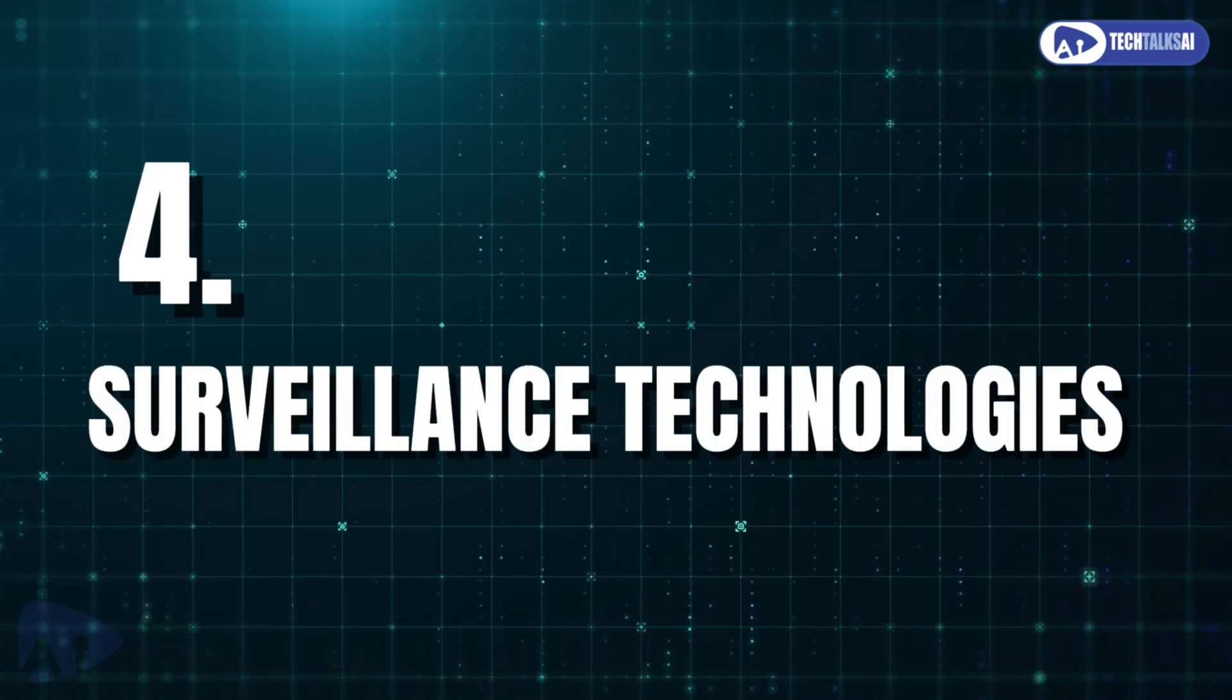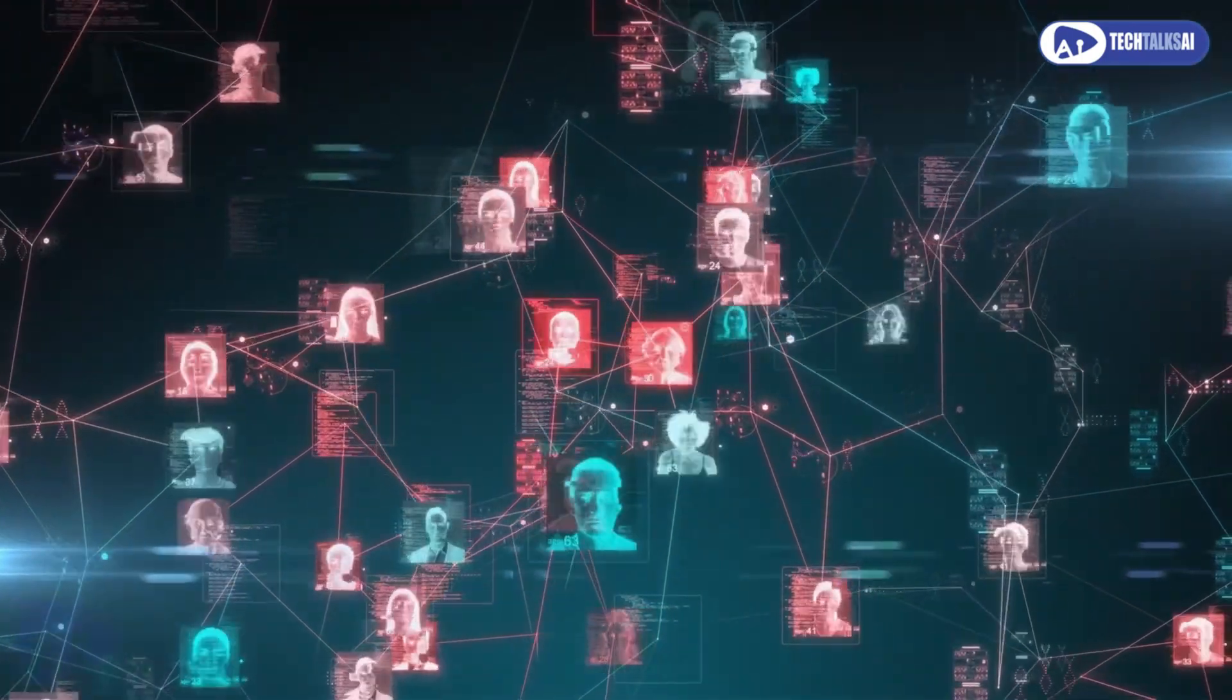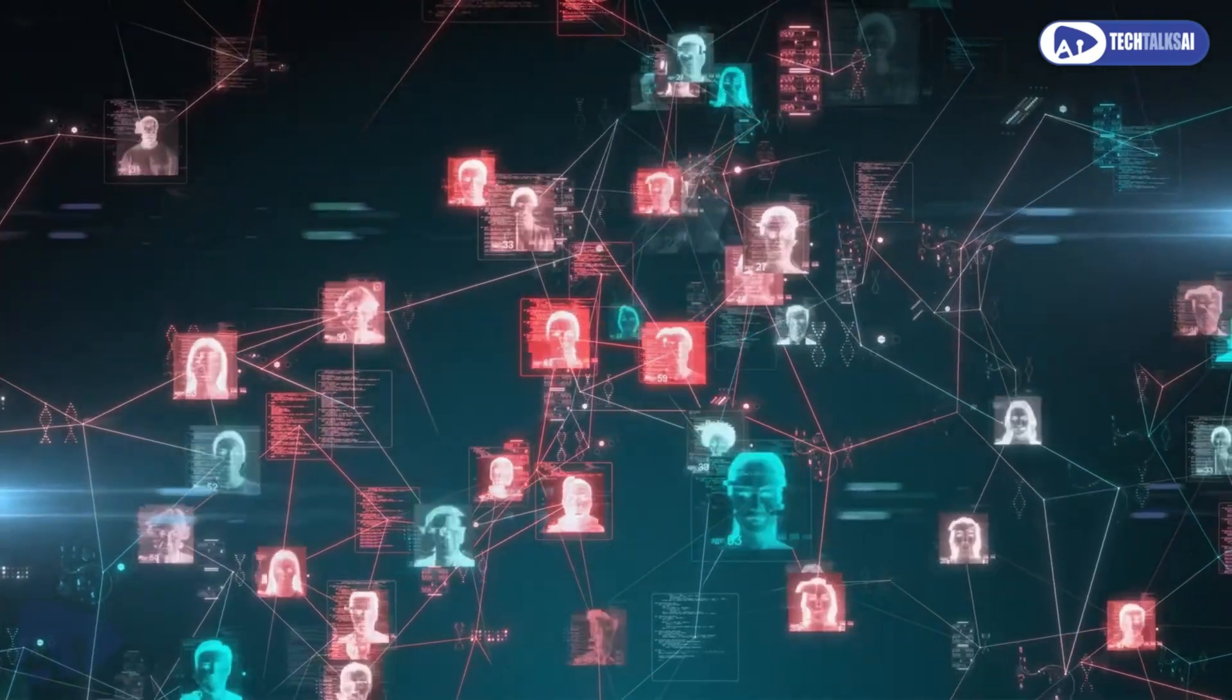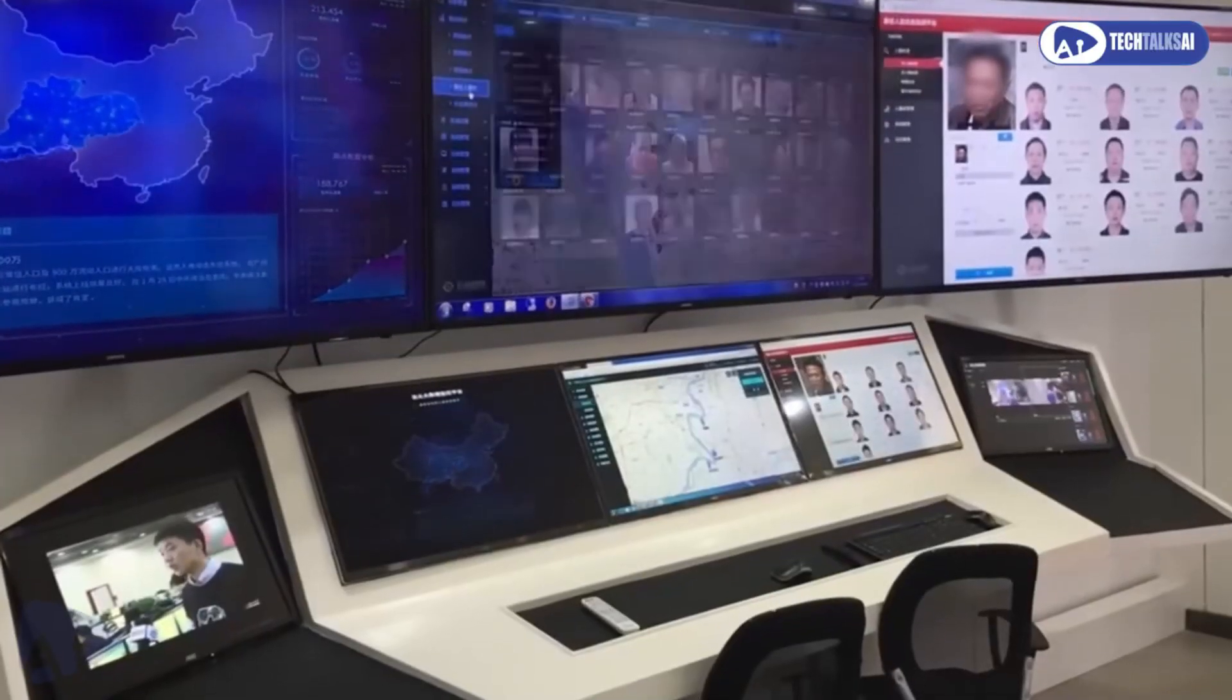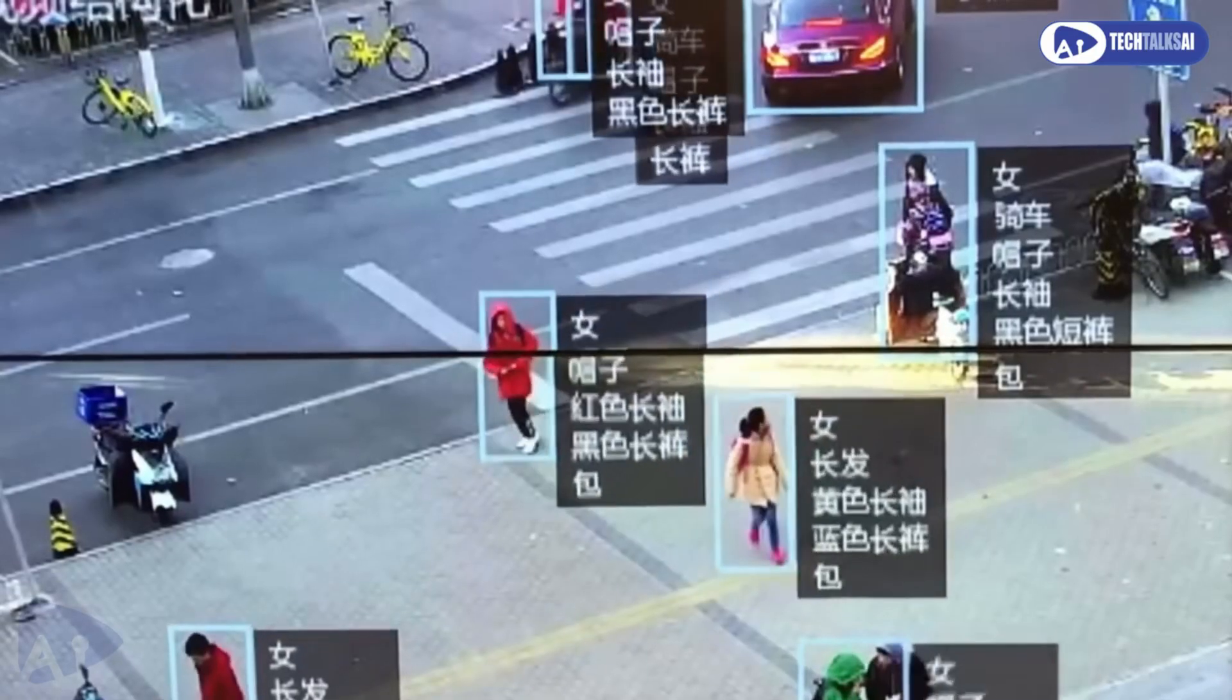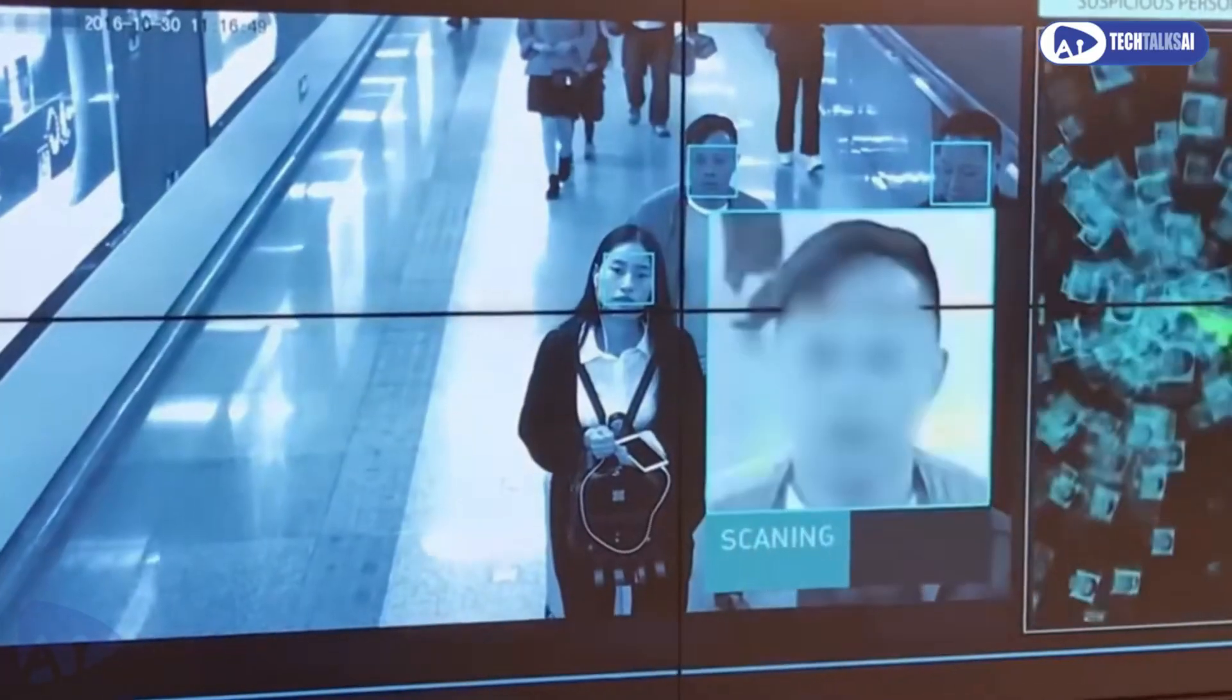Surveillance technologies are also becoming more advanced, with facial recognition and tracking systems popping up everywhere, from city streets to social media platforms. While these tools can help law enforcement and enhance security, they pose significant risks to privacy and civil liberties.